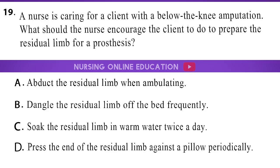Question 19. A nurse is caring for a client with a below-the-knee amputation. What should the nurse encourage the client to do to prepare the residual limb for a prosthesis? A. Abduct the residual limb when ambulating. B. Dangle the residual limb off the bed frequently. C. Soak the residual limb in warm water twice a day. D. Press the end of the residual limb against a pillow periodically.